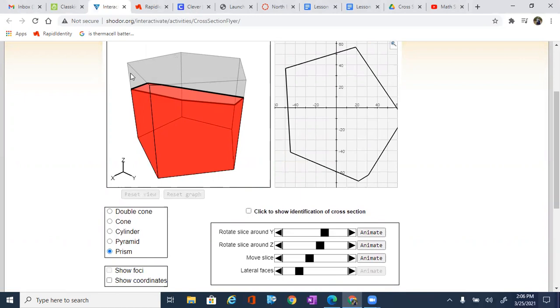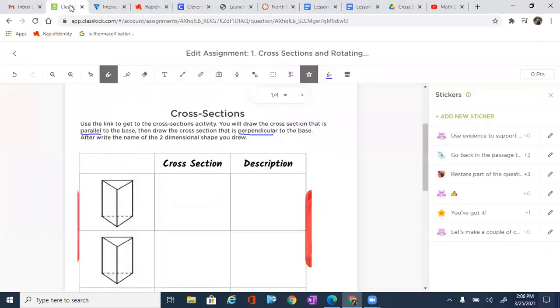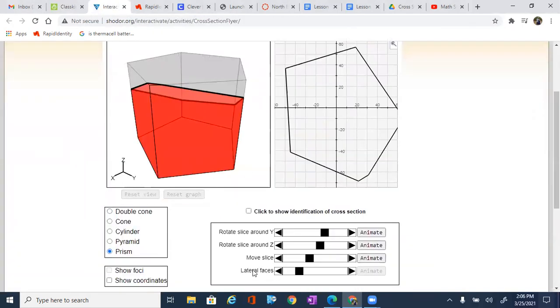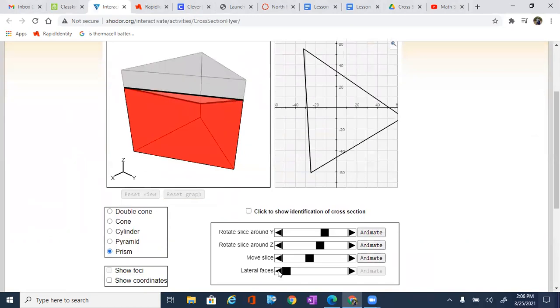But we don't need five based off our image. We need three because we were talking about a triangle. So I'm going to go to my lateral faces right here, and I'm going to bring that down until I see three.